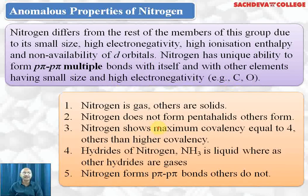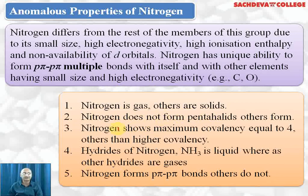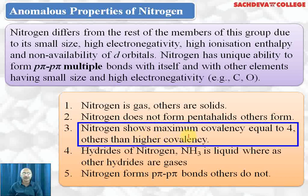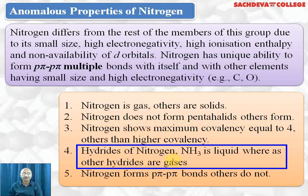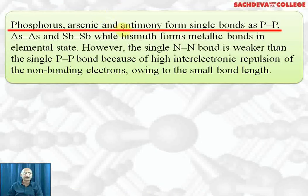How does nitrogen differ from the rest of the elements? Nitrogen is a gas; other elements are solids. Nitrogen is diatomic; other elements are polyatomic. Nitrogen does not form pentahalides whereas other elements do, because nitrogen does not have d orbitals. Nitrogen shows maximum covalency equal to 4, whereas others show higher covalency. The hydride of nitrogen, ammonia, is a liquid, whereas other hydrides are gases.